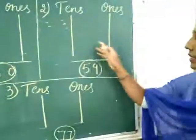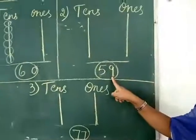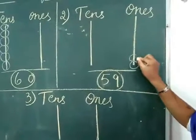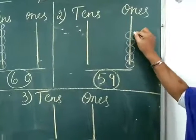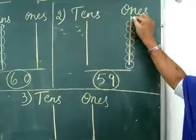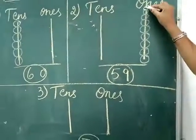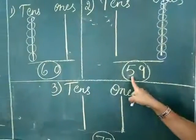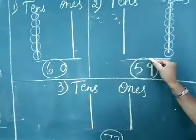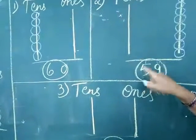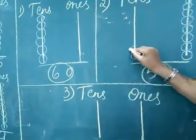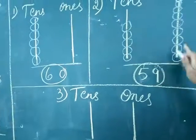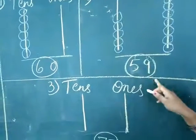Now look at your tens place and ones place. In the ones place, how many beads do you need to draw? Nine. Draw nine beads: one, two, three, four, five, six, seven, eight, nine. In the tens place, the number is five: one, two, three, four, five. Five tens and nine ones is equal to fifty-nine.